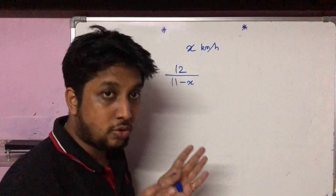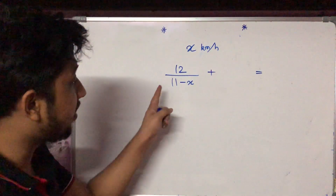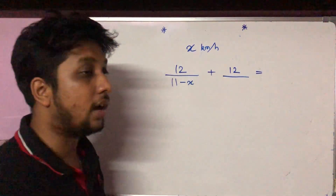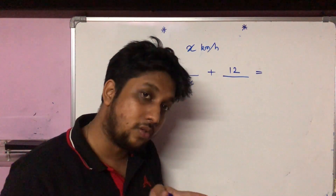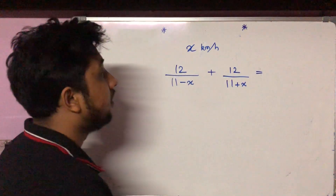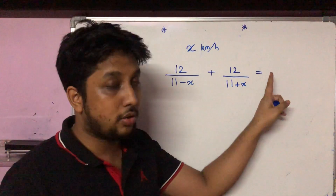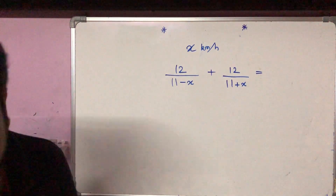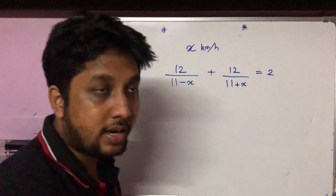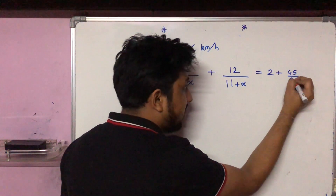The total time for upstream and downstream is 2 hours 45 minutes. Upstream time equals distance by upstream speed, and downstream time equals distance by downstream speed. In downstream, the stream goes with the boat, so both speeds add up — that is 11 plus x. When you add both times, you get the total time of 2 hours 45 minutes, which is 45 by 60 hours.